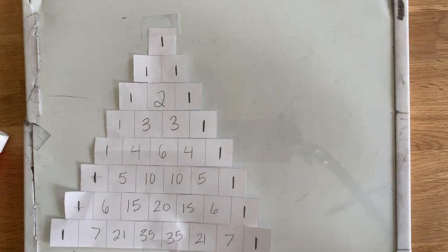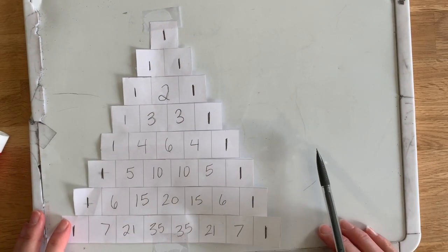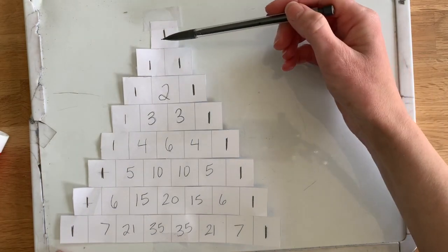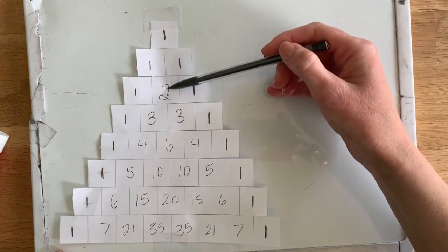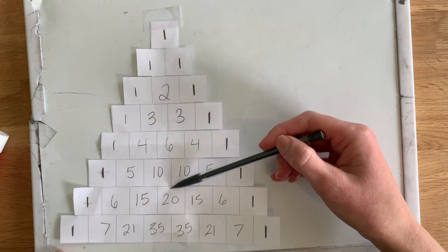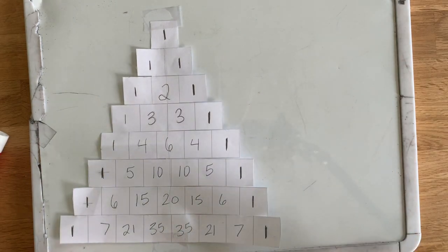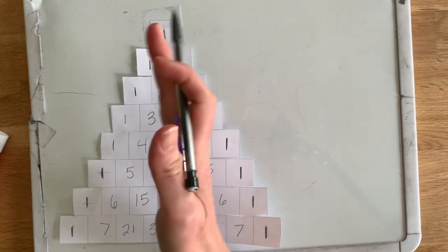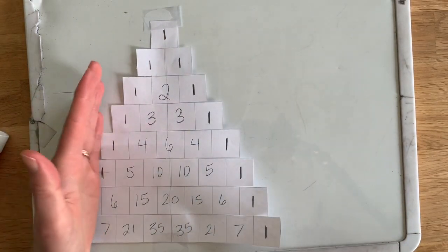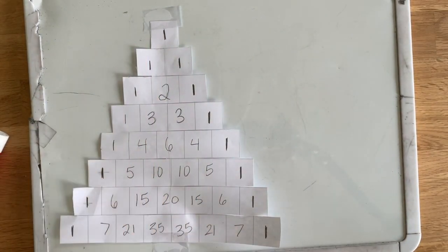Another interesting thing is that this triangle is symmetrical. So if I draw a line down the middle that line is like a mirror. If we pretend it's a mirror, this side looks the same as this side. We call that symmetrical.